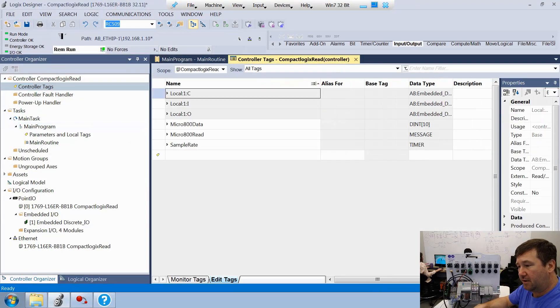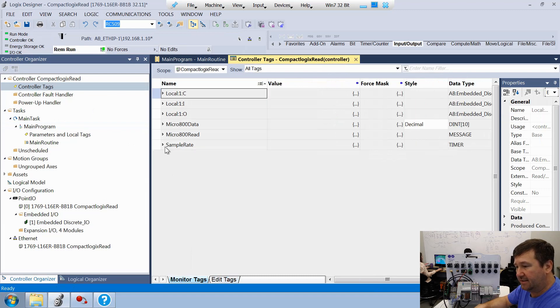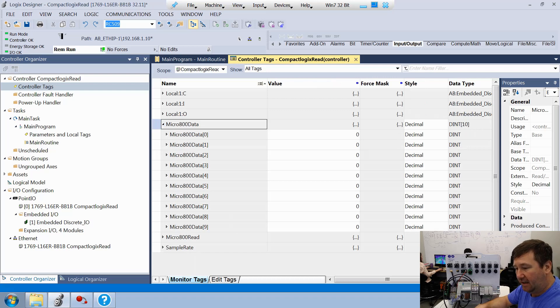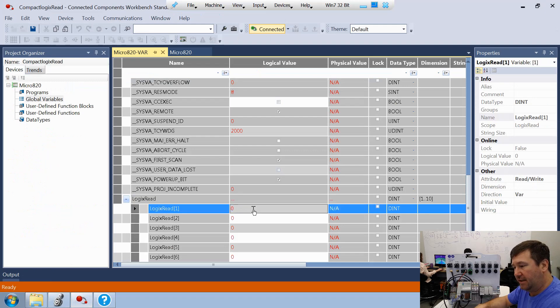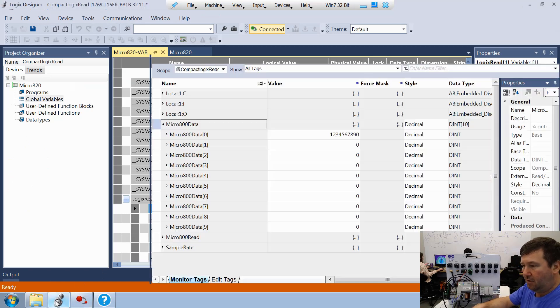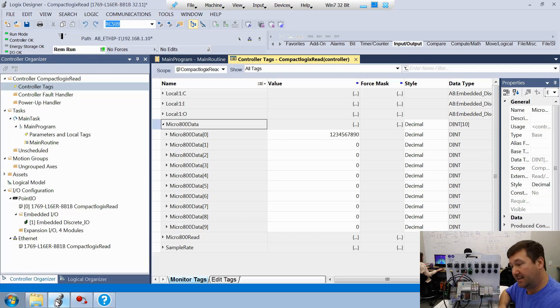So let's open up our controller tags and go to monitor tags. Let's look at that micro 800 data, which right now is showing a zero. So let's go over here to our logics read in connected components workbench and put in 1234567890. And now we'll go over here and we have that tag in our compact logics PLC.